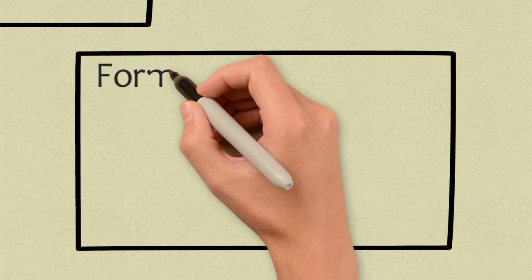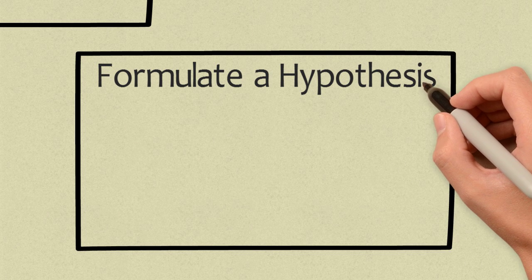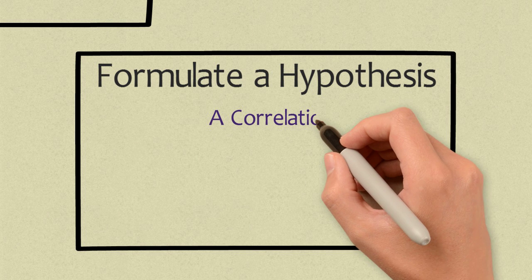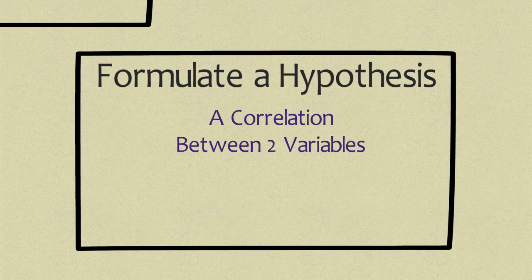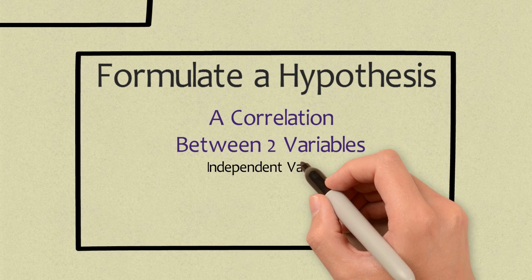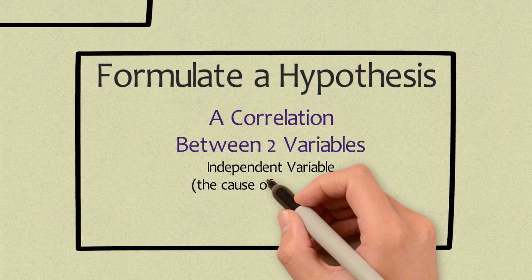After this step, you formulate a hypothesis. You may have already heard a hypothesis defined as an educated guess. While this is true, there is a bit more to a hypothesis. A hypothesis makes a correlation between two variables. One variable tends to predict how another variable will change. These two variables are referred to as the independent and dependent variables.